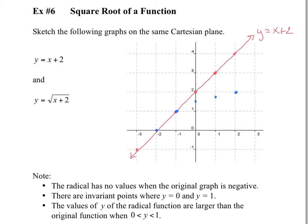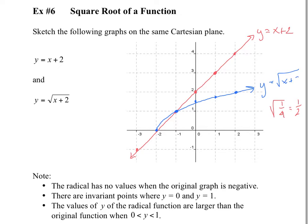What happens over this interval? If you've ever taken a square root of a number that's between 0 and 1 — take the square root of 1/4, you get 1/2. What do you notice? This number is smaller than that one, so the square root of a fraction between 0 and 1 gives you something larger. So over this interval, when the y values are between 0 and 1, when you take the square root, they actually become bigger, and that's where you get that shape — that's your graph y equals square root of x plus 2.